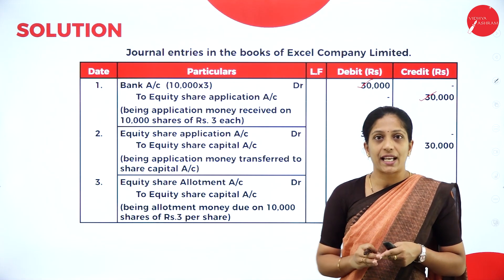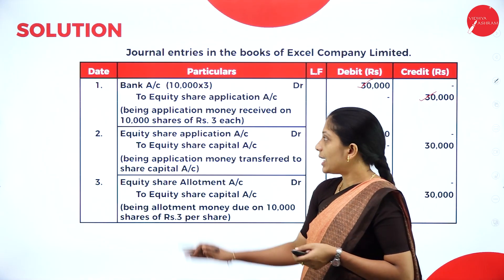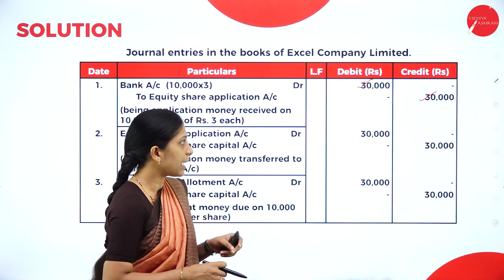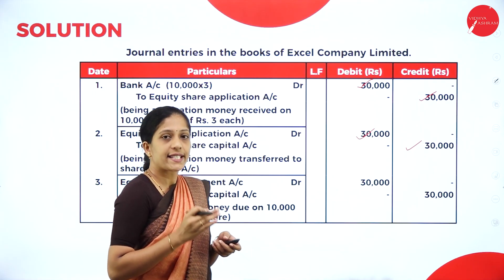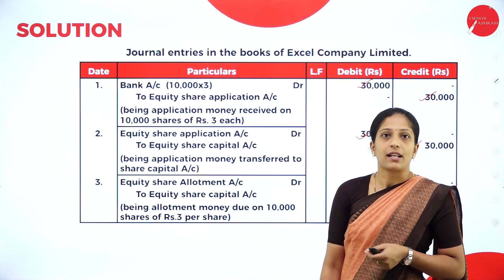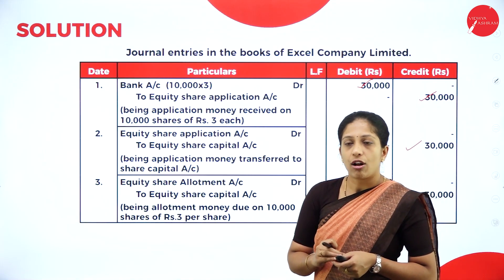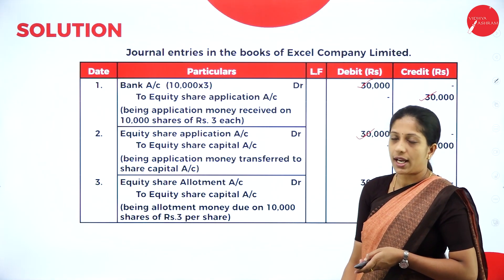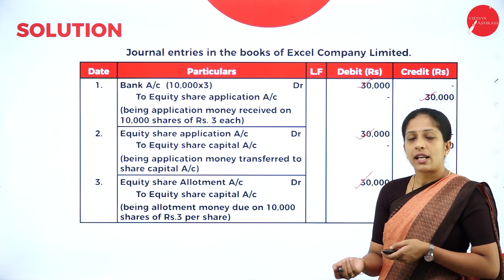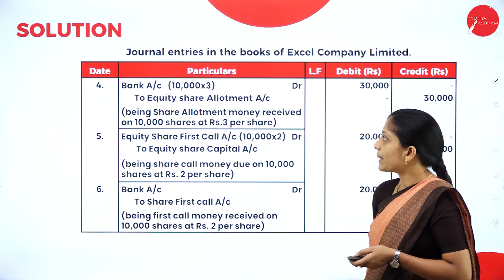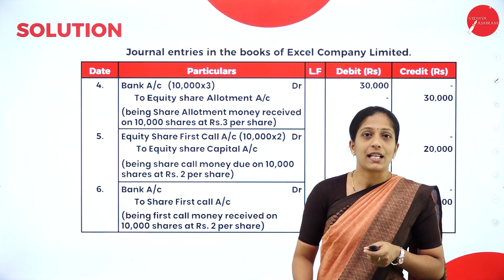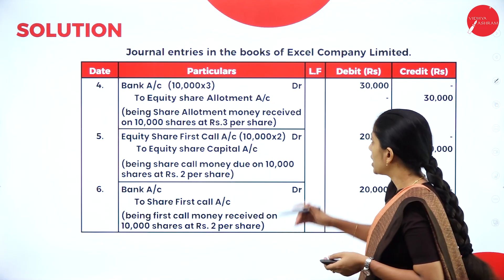For the allotment stage, the third entry is allotment money due: Equity Share Allotment Account Dr. to Equity Share Capital Account — 10,000 × ₹3 = ₹30,000. Narration: allotment money due on 10,000 shares of ₹3 per share. The fourth entry is allotment money received: Bank Account Dr. to Equity Share Allotment Account — 10,000 × ₹3 = ₹30,000. Narration: share allotment money received on 10,000 shares of ₹3 each.